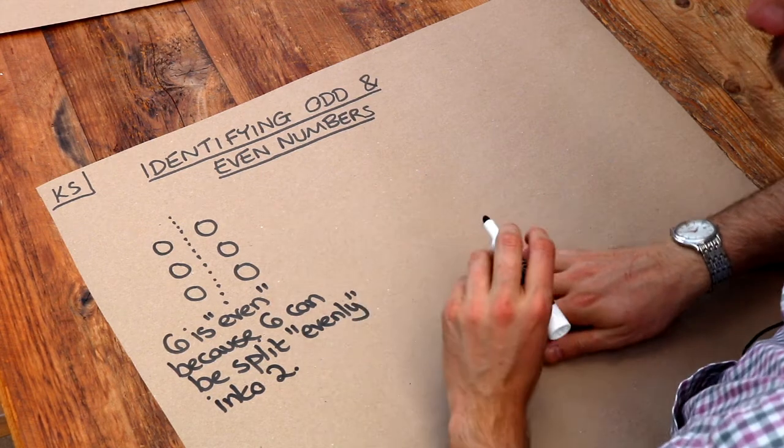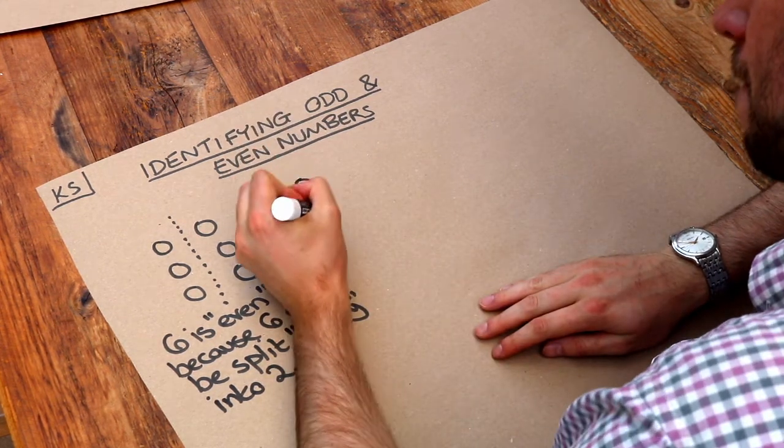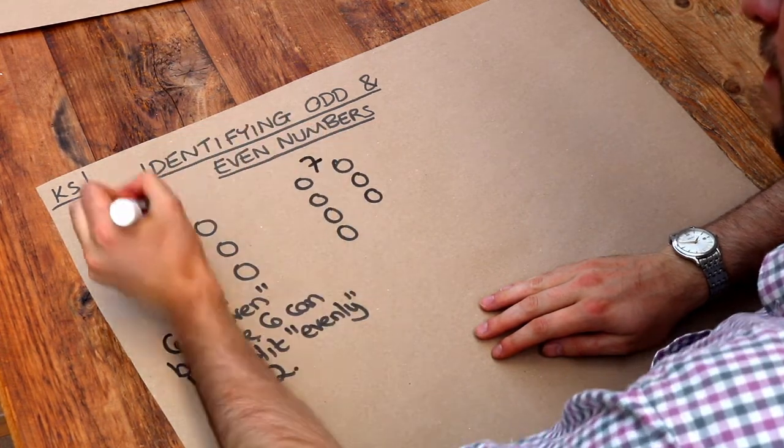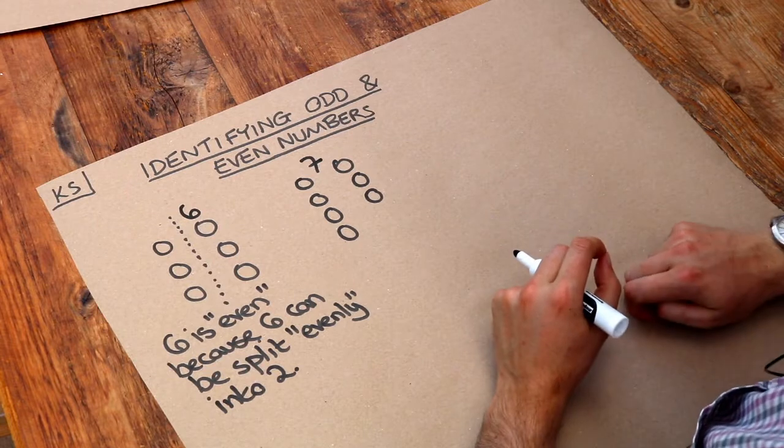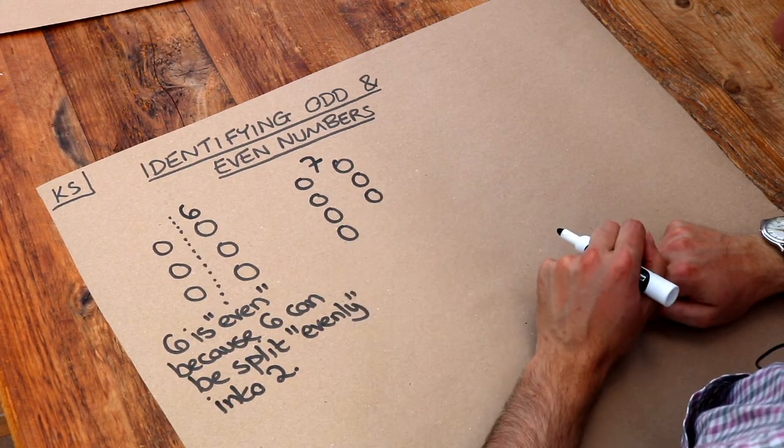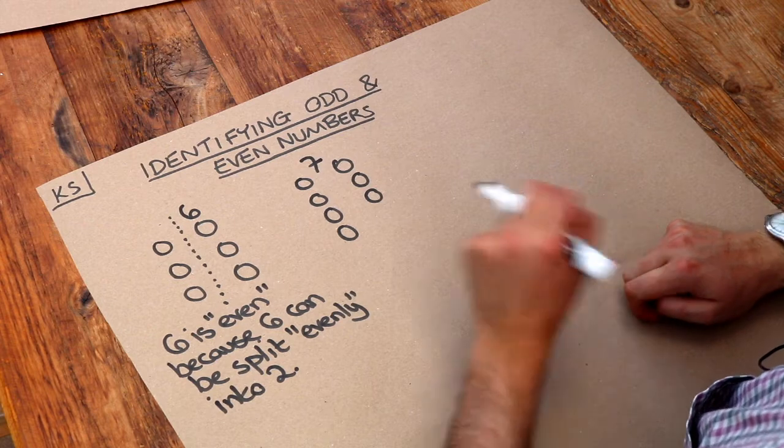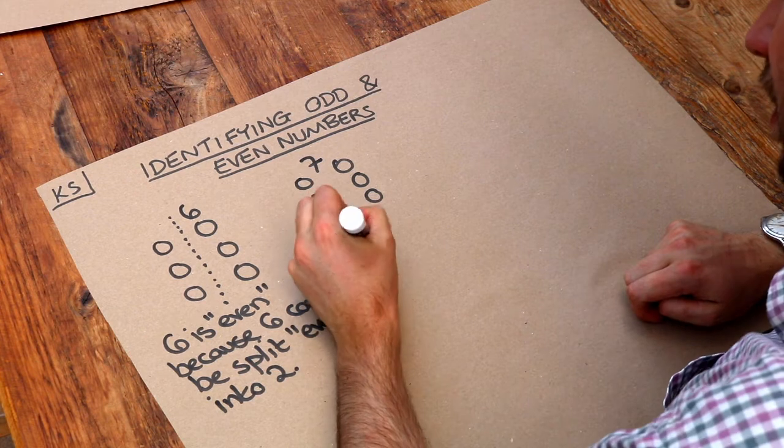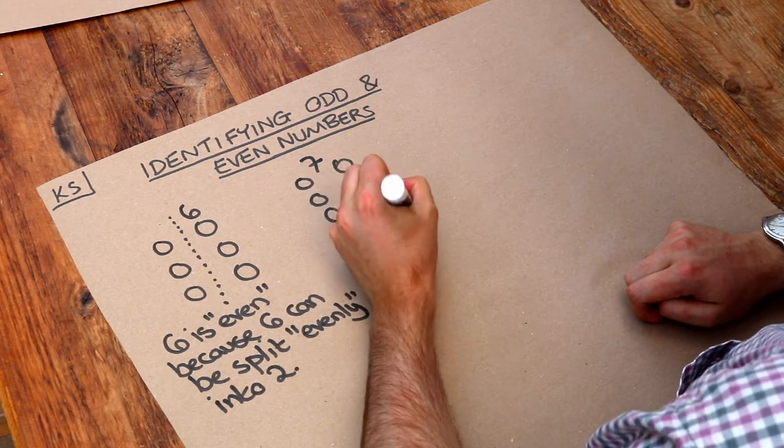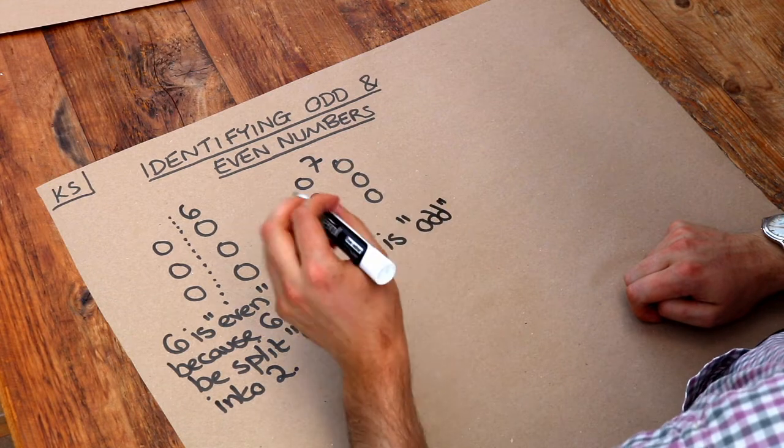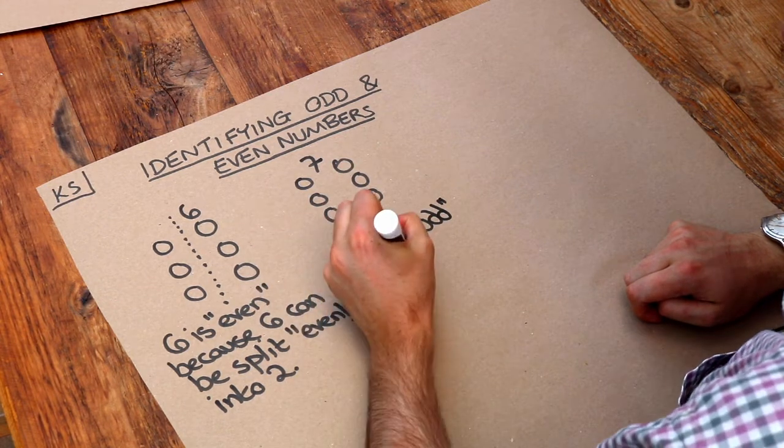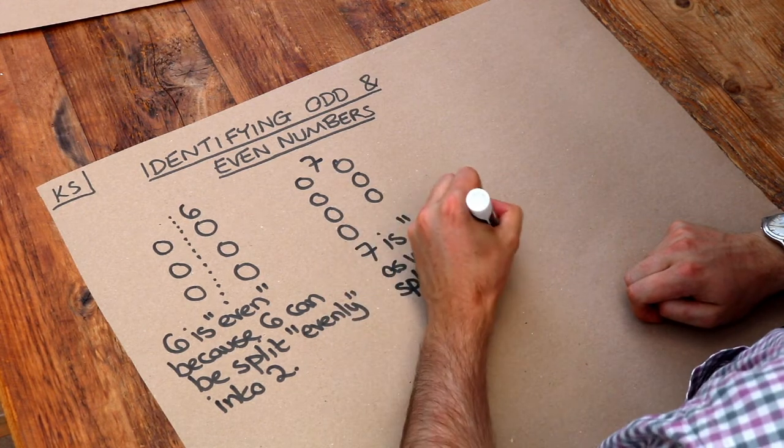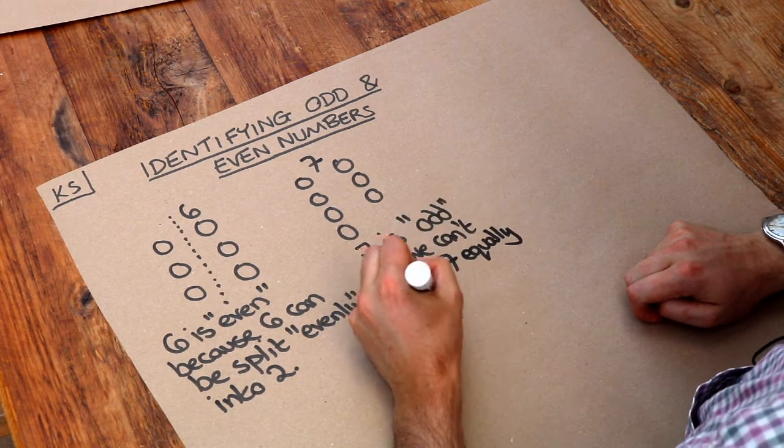But if say we had seven friends. Then we've got a bit of a problem because there's no way we could have two football teams amongst my seven friends such as the same number of people on each team. So we say that seven is odd, which is the opposite of even.